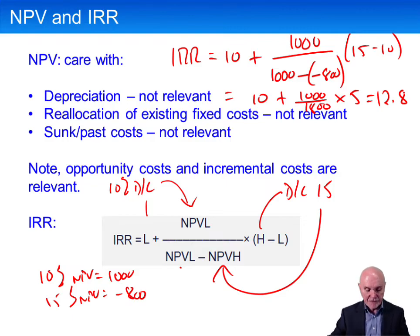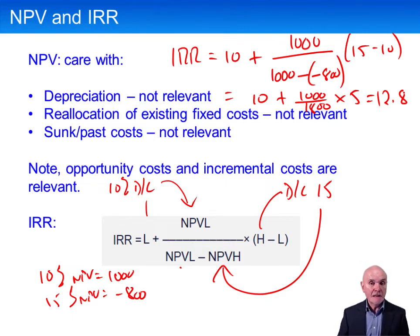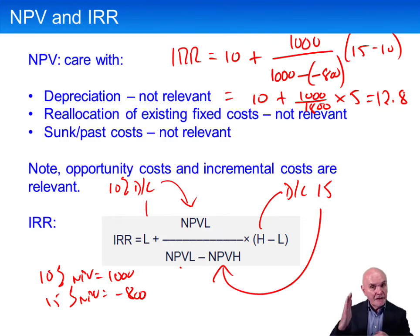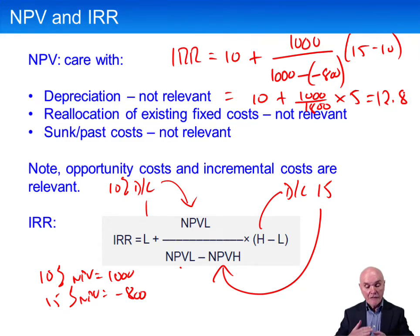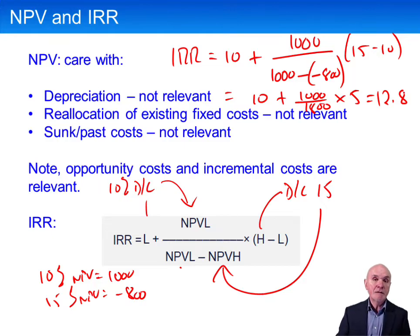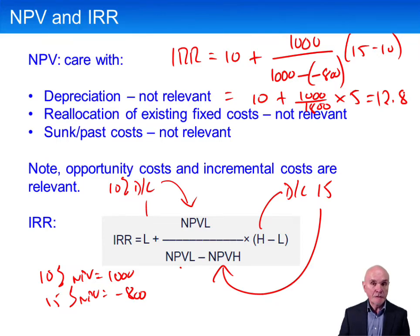If you choose different starting discount rates, you'll end up with very slightly different net present values. If the internal rate of return is higher than the discount rate, it means you're earning money faster than you have to pay interest. If the internal rate of return is below the discount rate, it means the project isn't earning enough to cover the interest.